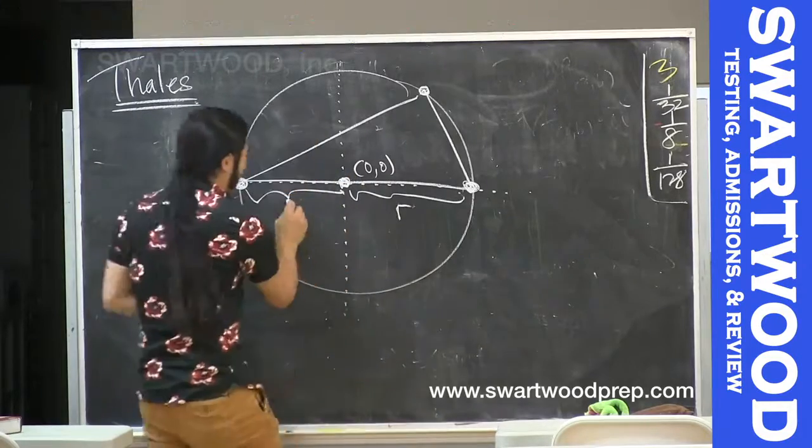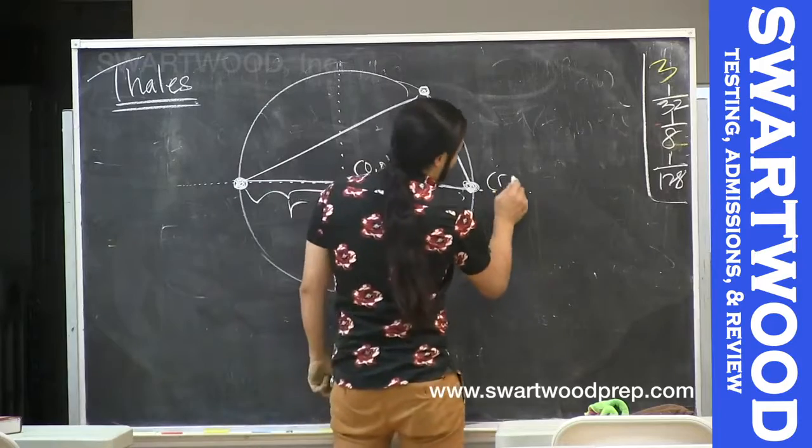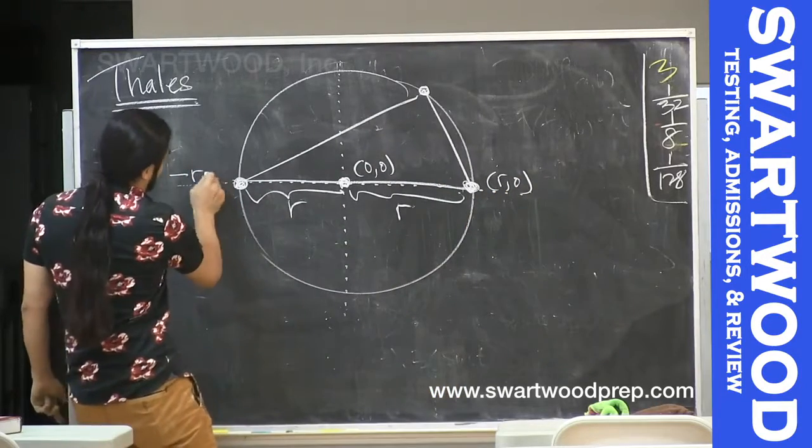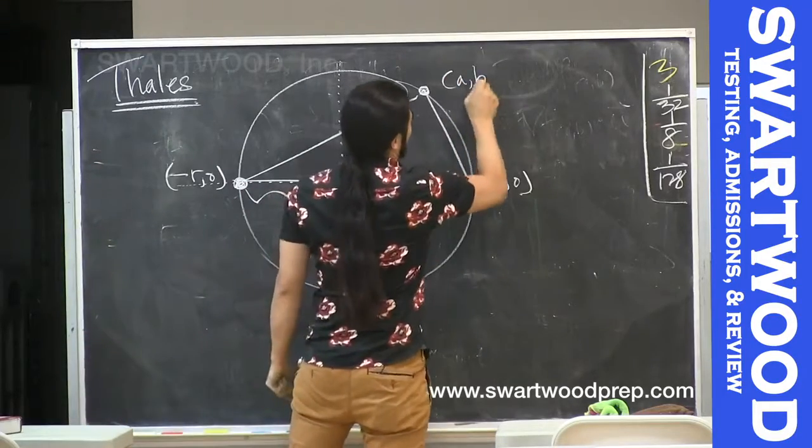Life is easy because these are radii so their length is going to be say R. So the coordinates here would be R,0 and negative R,0. This guy we're just going to arbitrarily call A,B.